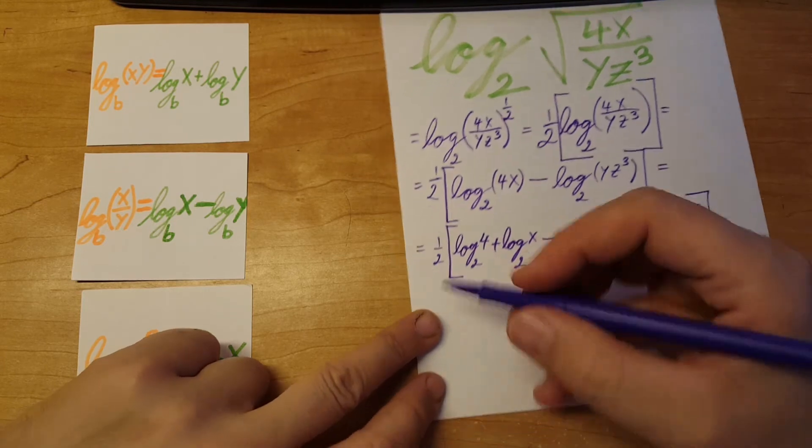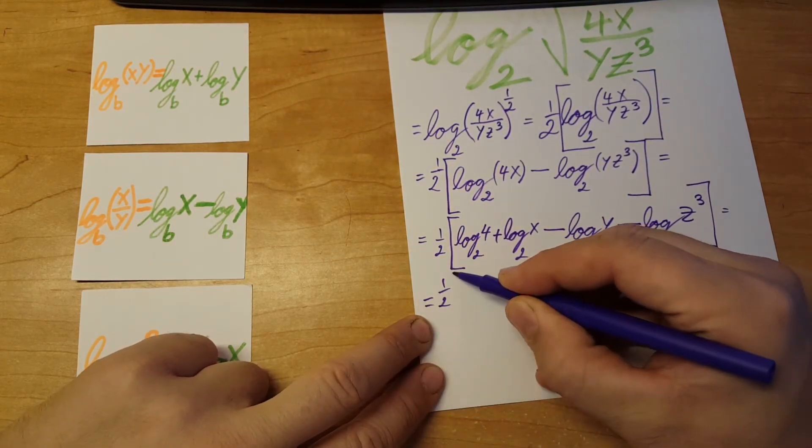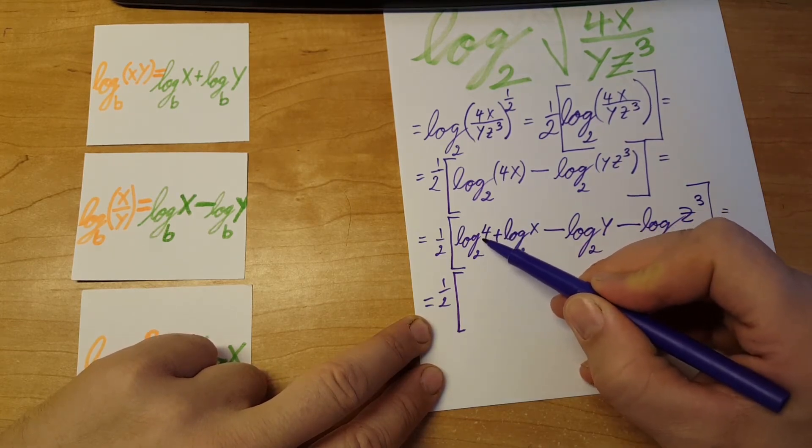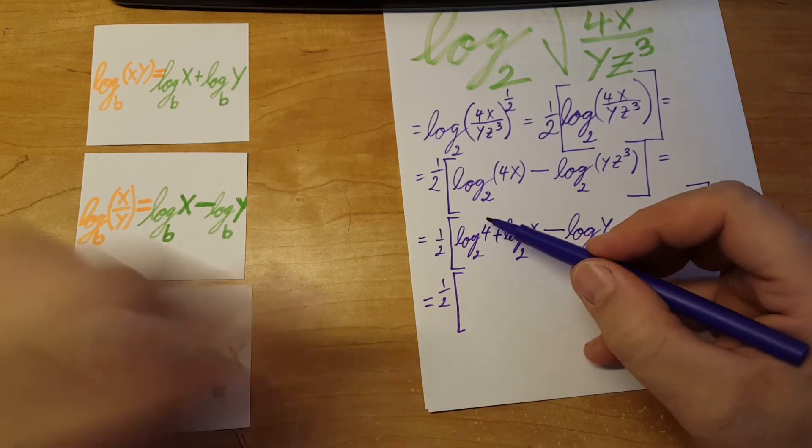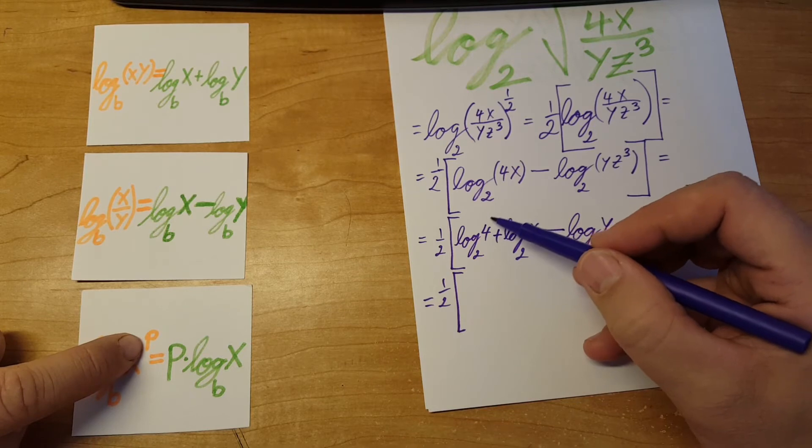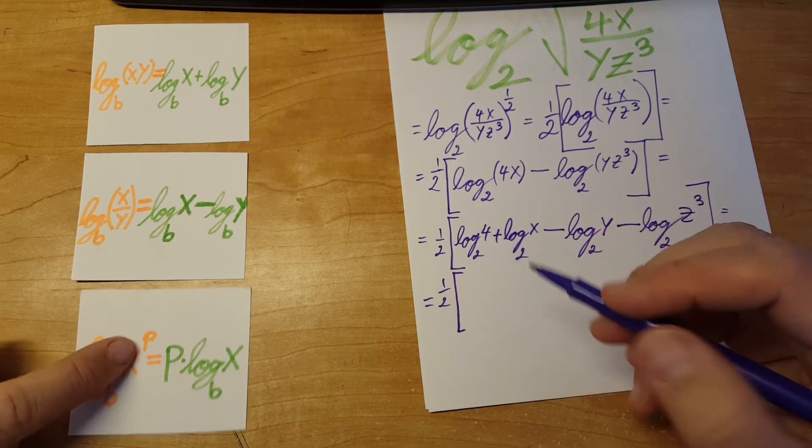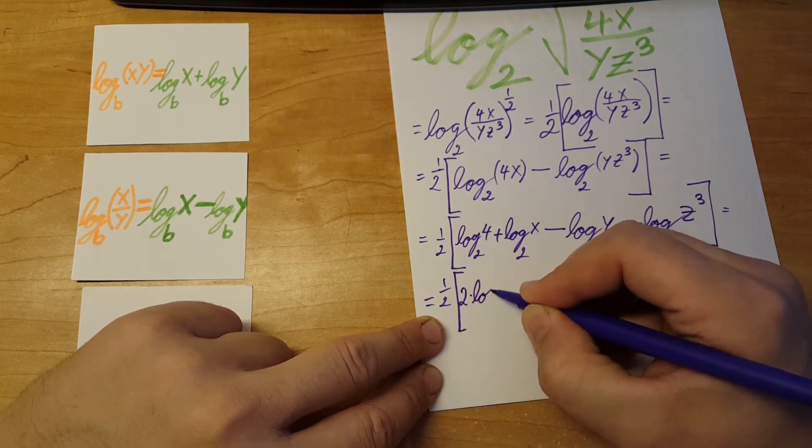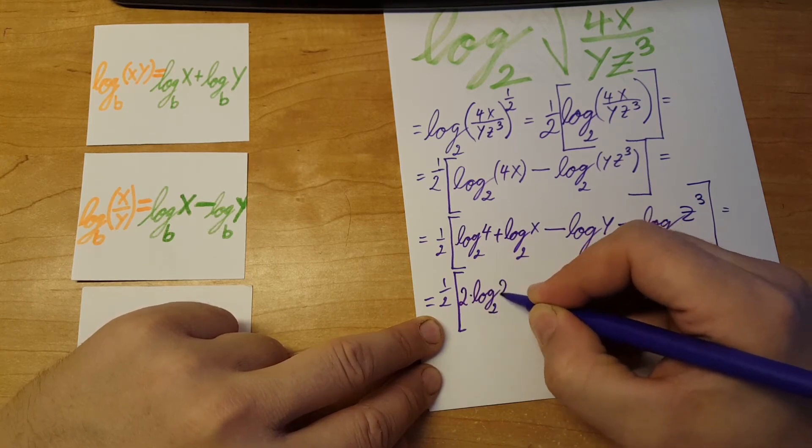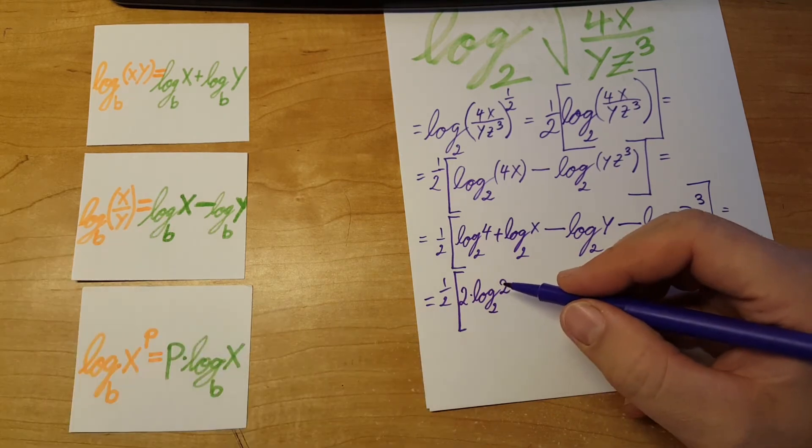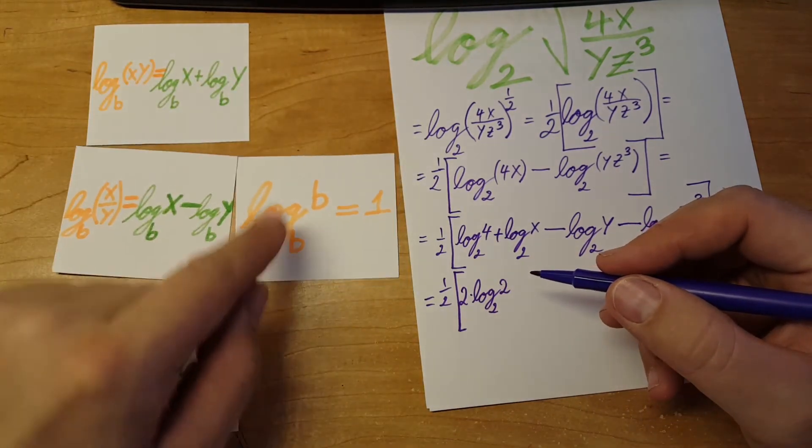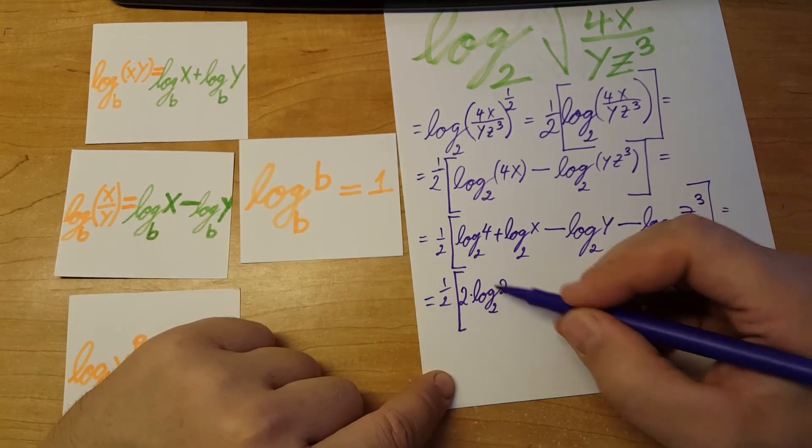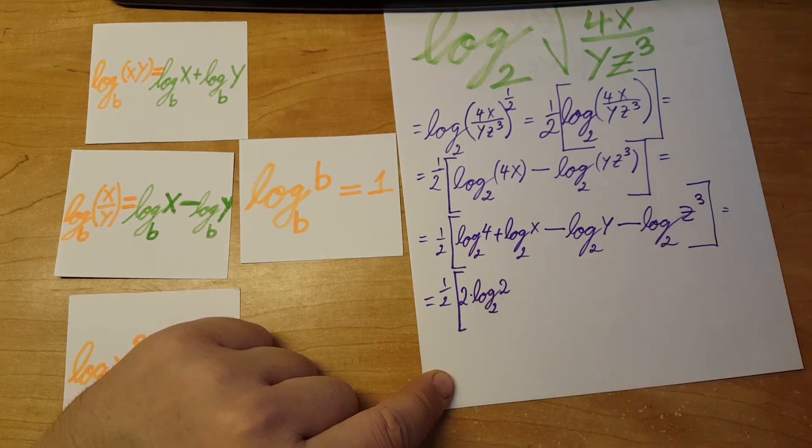One-half times this one... The 4 we can rewrite as 2 to the power of 2. Again, we're going to use the power rule and drop the power in front, so we're going to have 2 times log base 2 of 2. And log base b of b equals 1, same situation here, so this whole thing is 1. So 2 times 1 will be just 2.